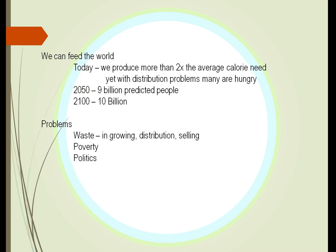We can feed the world. Today we produce more than two times the average caloric need. We're going to have 10 billion people by 2100. We have to reduce waste, reduce poverty, and change our politics.